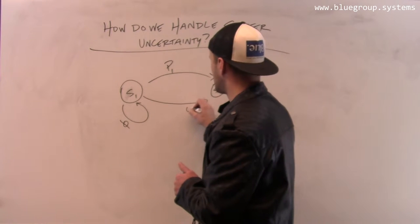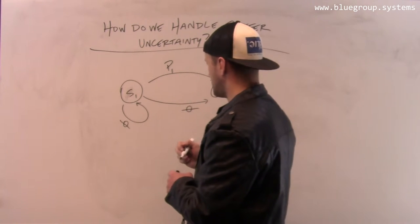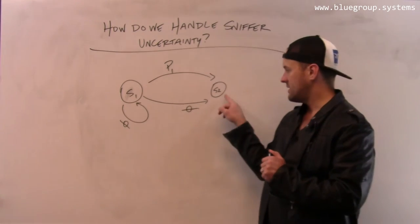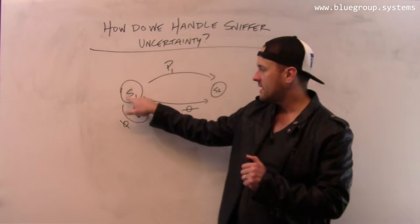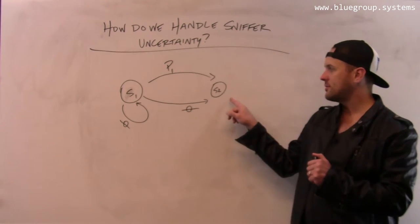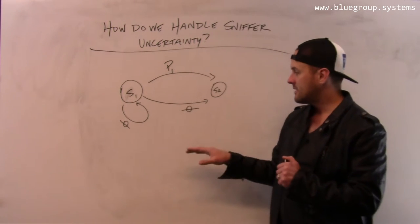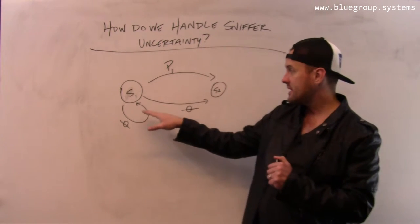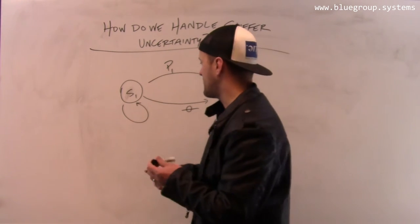And then the second thing is, I need to create a null transition from P1 to, from S1 to S2. So this transition indicates that it's possible that the device under test can get to S2 because the sniffer missed P1. So it's possible that the sniffer missed P1, but the device under test received it and so it got from S1 to S2.